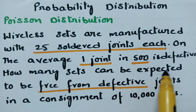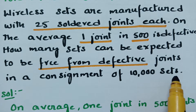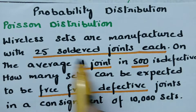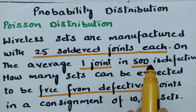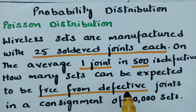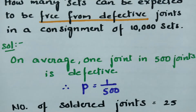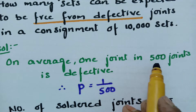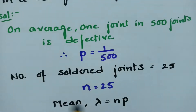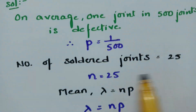How many sets can be expected to be free from defective joints in a consignment of 10,000 sets? It is very clear that N is given as 25 and P is given as 1 by 500, and we have to find out how many sets can be expected to be free from defective joints in a consignment of 10,000 sets. On average, one joint in 500 is defective; P is equal to 1 by 500 and the number of soldered joints is 25, so N is equal to 25.